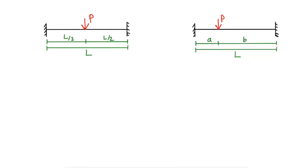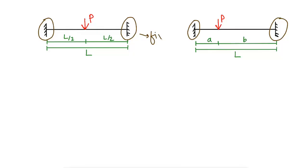We see here that these are two fixed beams. How we can define these as fixed beams? Because they are provided with fixed supports. This support is a fixed support, and here as well a fixed support. In this beam both supports are fixed supports. When all of the supports in a beam are fixed, we call such beams fixed beams.